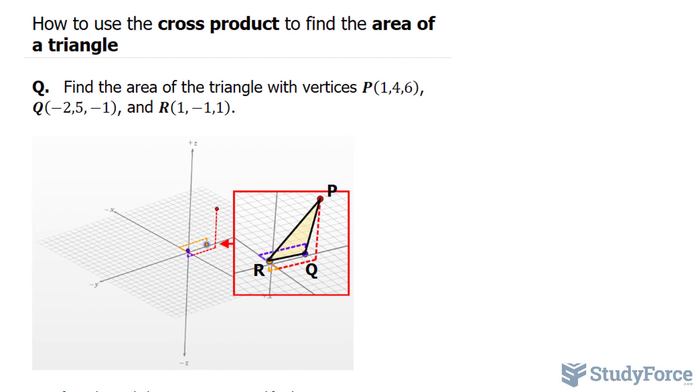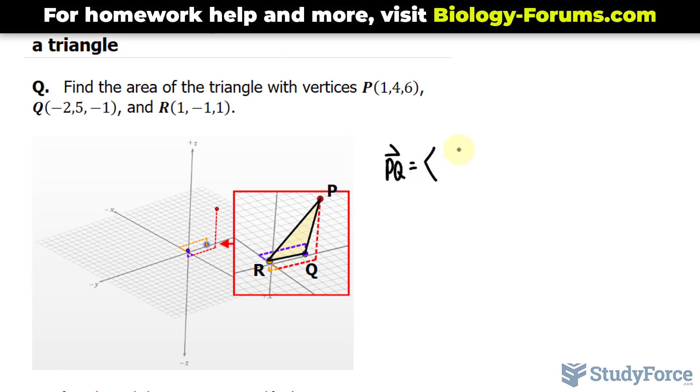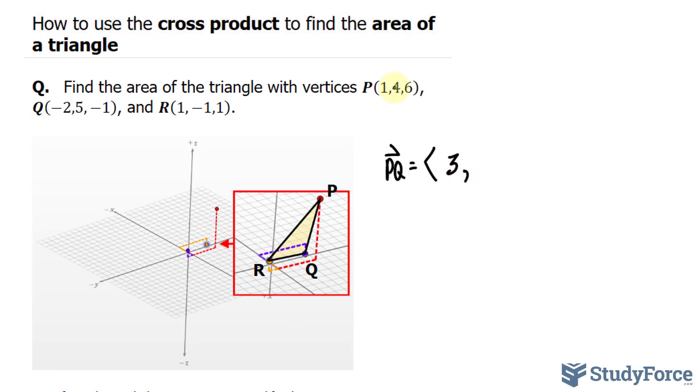The first thing that I want to do is find the vector that represents P to Q and a vector that represents P to R. To find a vector that represents P to Q, I'll write down PQ. And that has an X, Y, and Z component. We can find the X, Y, and Z component by taking the differences of the coordinates. So 1 minus negative 2, that's positive 3. 4 minus 5, that's negative 1. And 6 minus minus 1 is positive 7.